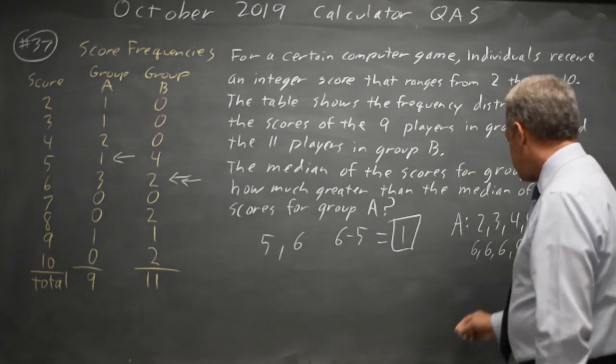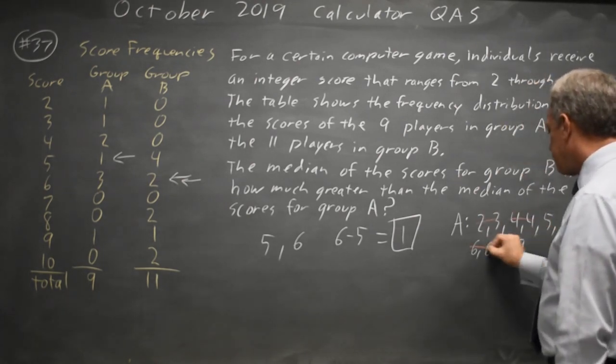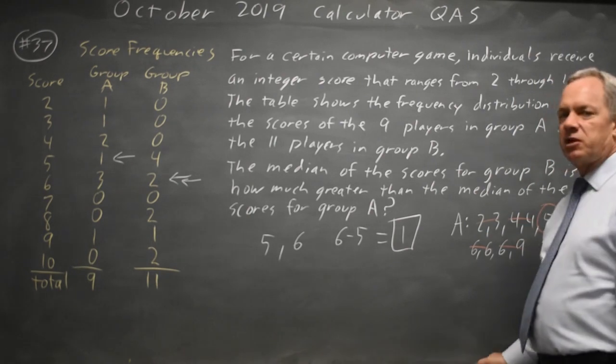If you cross out the two bottom scores and the two top scores, two more bottom and two more top, your median is the middle score that's left.